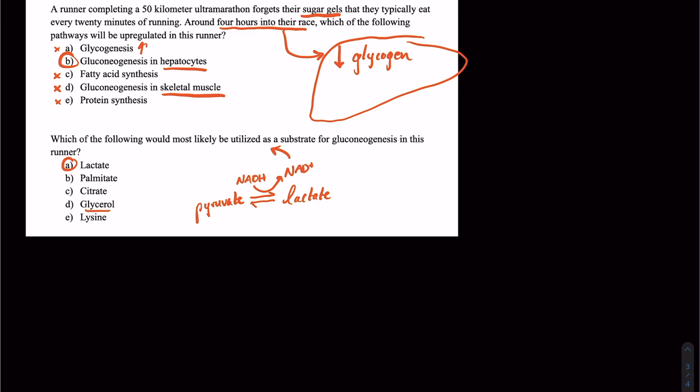Citrate, that's a substrate of the Krebs cycle, which isn't going to necessarily be a substrate for gluconeogenesis. And lysine is an amino acid that's purely ketogenic, so it's useful for making ketones or acetyl coenzyme A, but not so much for making glucose.